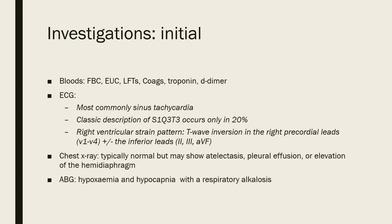Initial investigations include basic bloods: FBC, EUC, LFTs, coagulation, troponin, and potentially a D-dimer. A practical tip from the ED: collect a green tube and a purple tube first as you nearly always need those, then collect the blue tube which you can run coags and D-dimer on. That way, if seniors decide a D-dimer is warranted later, you've already collected it and can just add it on without taking more blood.